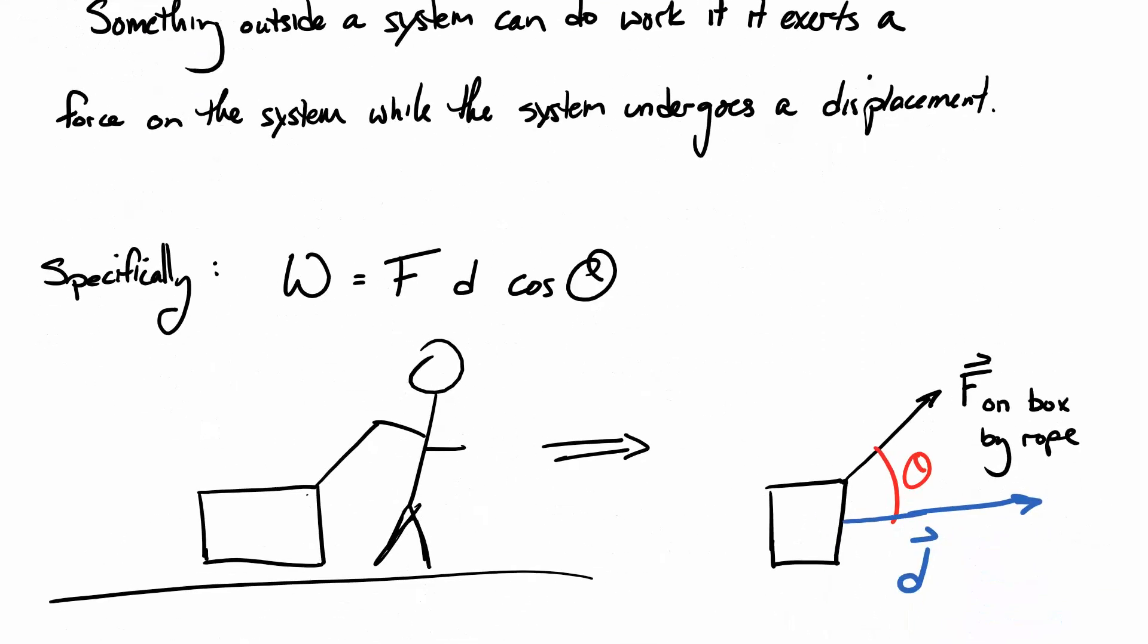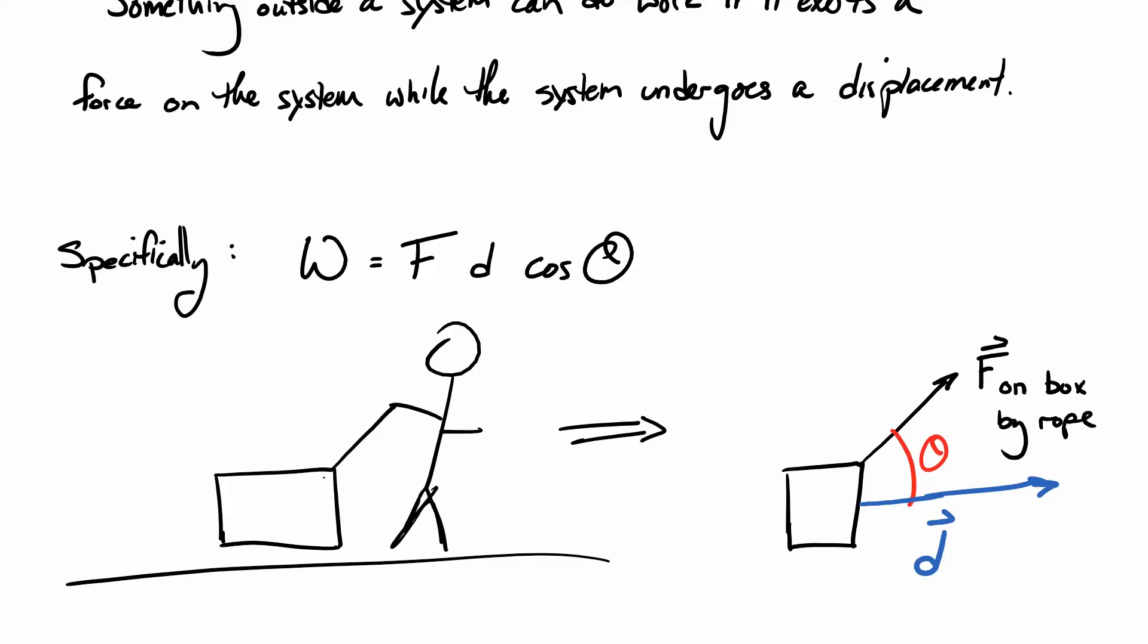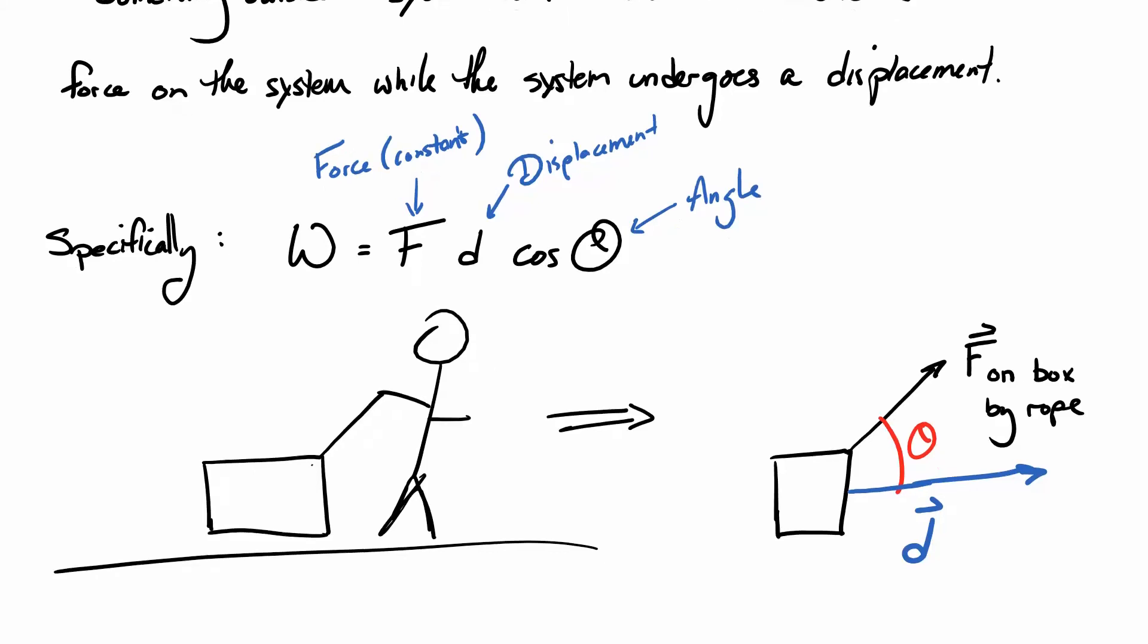So specifically, when we talk about work, it is going to be F D cos theta. F is going to be the force that we are applying, which we're going to take to be constant in this case. It's usually going to be constant except for one example. D is the displacement. Don't ask me why it's suddenly not delta x. We just want to confuse you. Cos theta, we don't know what cosine is. That's going to be confusing. Well, let's leave that alone. Theta is just the angle measured between our force and the displacement.